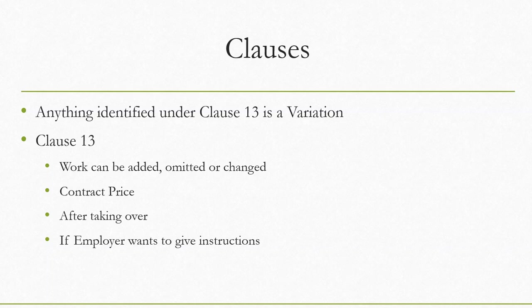Either addition, omission, or changes will be identified as a variation. Because of variation, your contract price will definitely be changed. If it is an addition, the contract price will increase; if it is an omission, it will decrease. After issuing the taking over certificate — which is normally issued at the end of practical completion — once the employer is satisfied and the contractor hands over, the employer issues the taking over certificate.